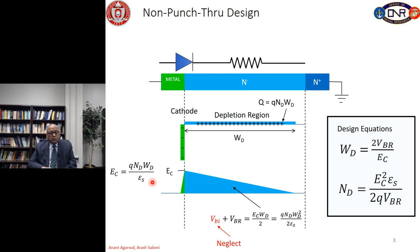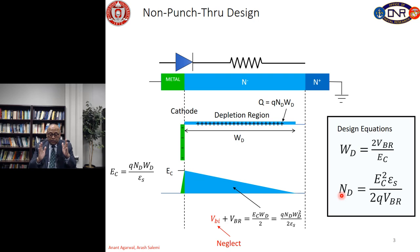Substituting the value of EC, you can derive the relationship for the breakdown voltage. We can neglect VBR since it is less than 1 volt — for a 600-volt design we can definitely neglect it. These design equations let you calculate the drift layer thickness WD and the doping for that drift layer given the breakdown voltage and the critical field. This gives a unique solution for thickness and drift layer doping for non-punch-through design.